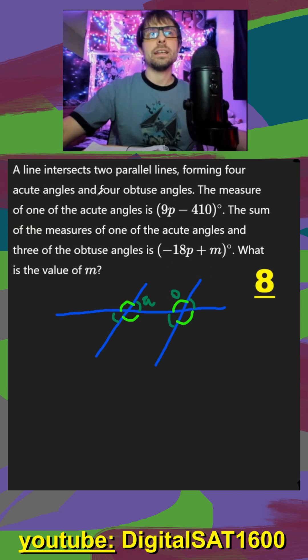Next, they tell us that the measure of one of the acute angles is this. So we'll just label that as A. And the sum of the measures of one of the acute angles and three obtuse angles is that. So I'll make a little formula. We'll just say that A plus three O's is going to be this. What is the value of M?